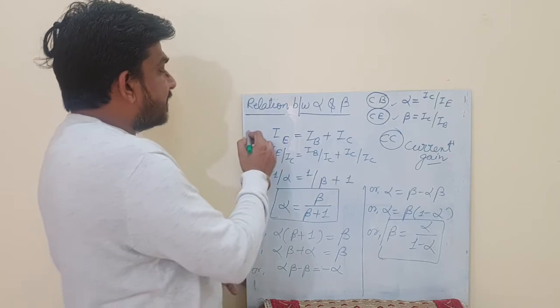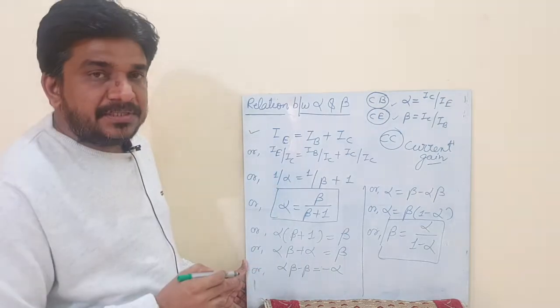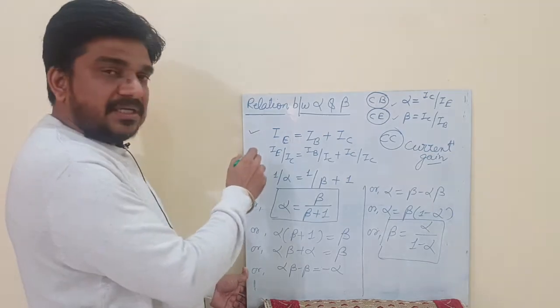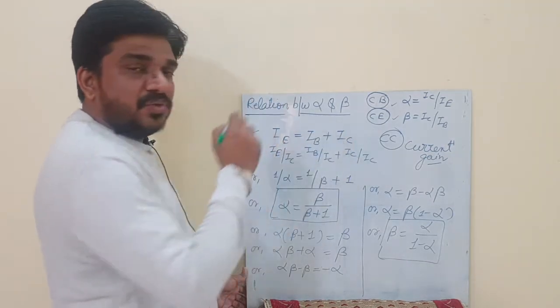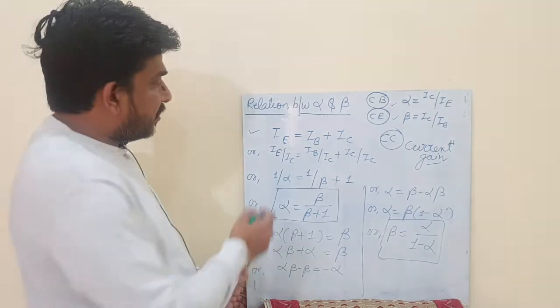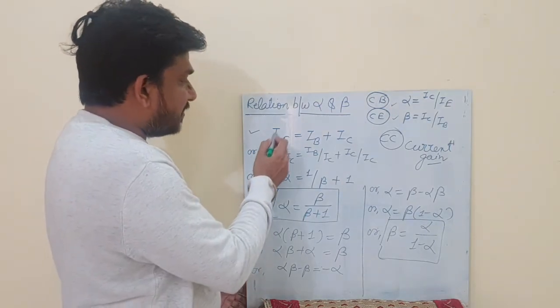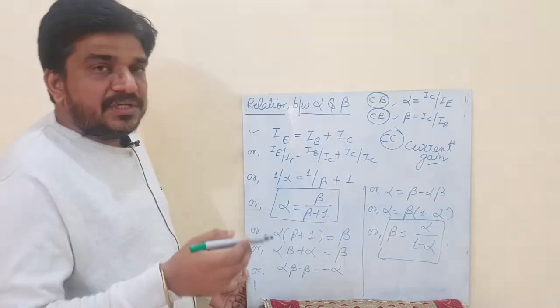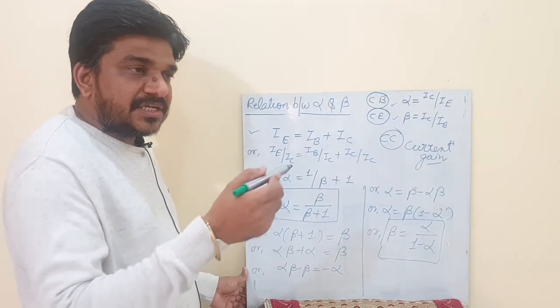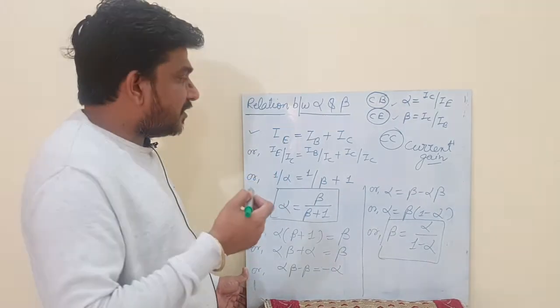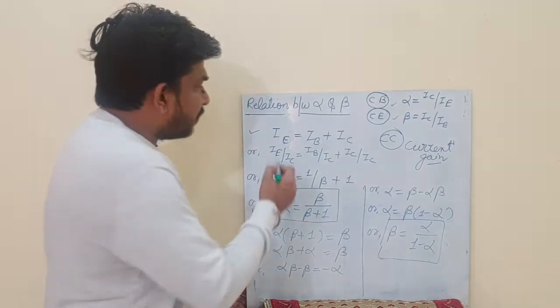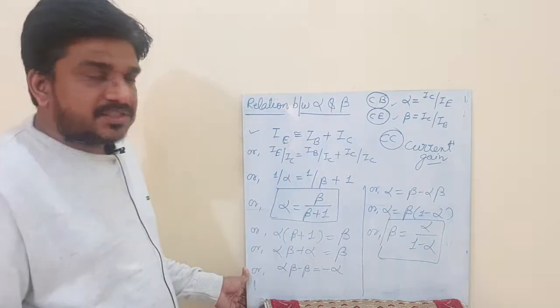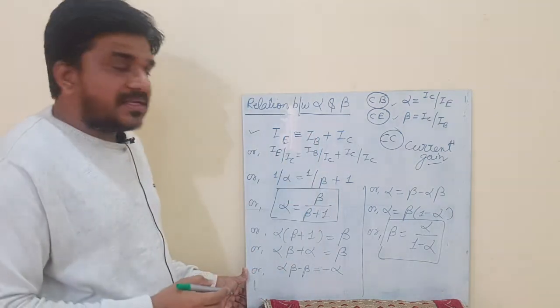Now we know that IE equals IB plus IC, meaning the current coming out from the emitter is passing through the base and reaching the collector. Although there are a few leakage currents running opposite to the main current direction, we are not taking them into account. We can say they are more or less equal: IE equals IB plus IC.